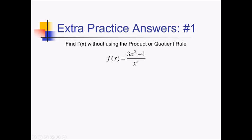It looks like we can divide both of these terms in the numerator by this denominator of x cubed. Going from left to right, 3x squared over x cubed is going to be 3x to the negative 1. And if we have negative 1 over x cubed, I can rewrite that as negative x to the negative 3.